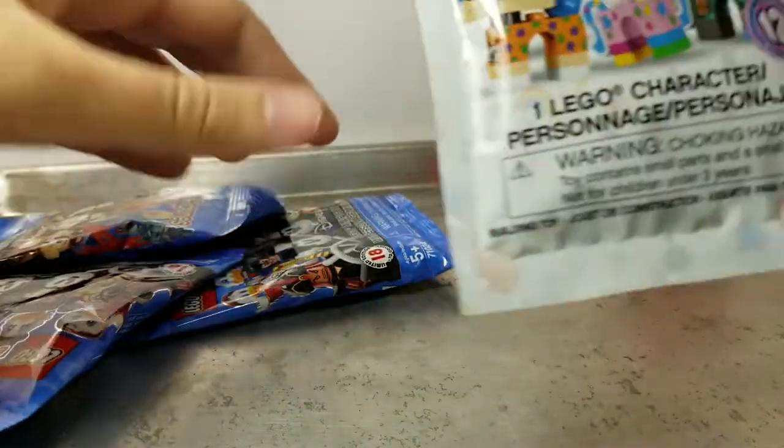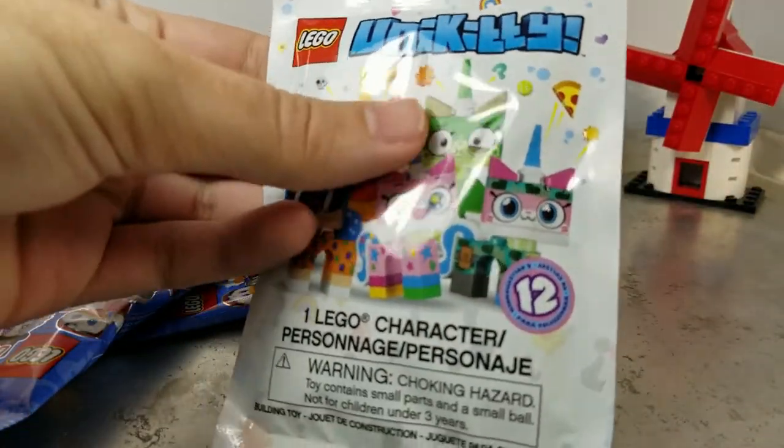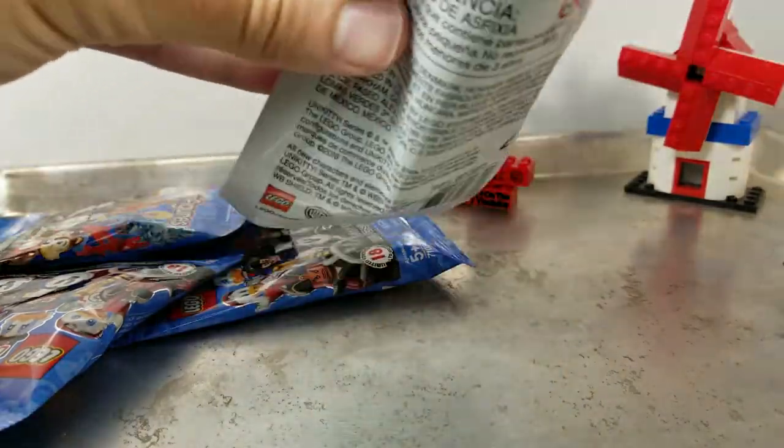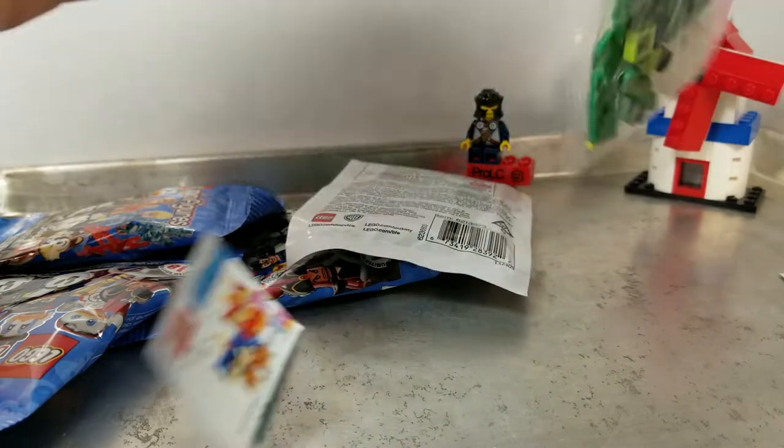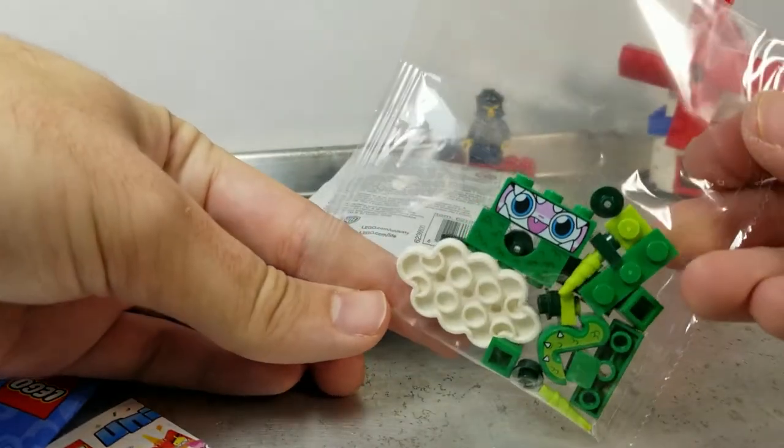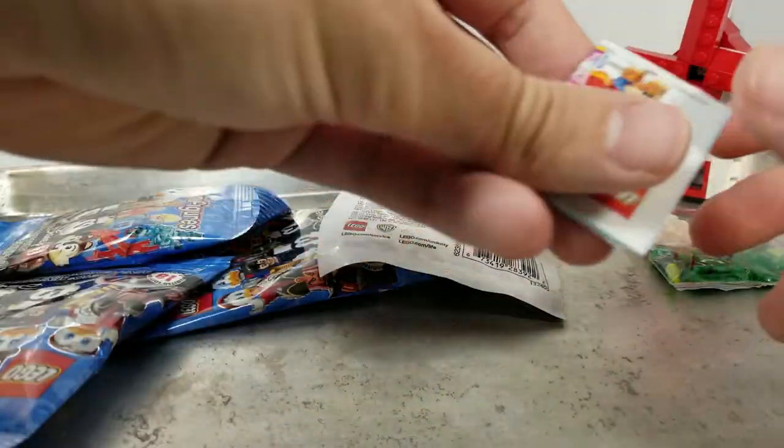But first we're going to start with Unikitty. As every week I mentioned that we're looking for Chocolate Cake Puppy Corn, and every week we don't get him. I got a green, and it's a good one. It's the Godzilla-like monster Unikitty. I like that a lot.